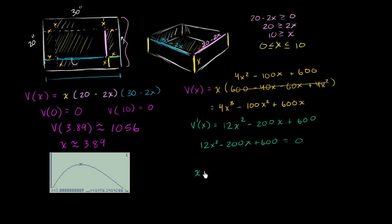So the x's that satisfy this are going to be x is equal to negative b. So it's 200, negative negative 200 is positive 200, plus or minus the square root of b squared, which is negative 200 squared. So I could just write that as 200 squared. That's going to be 4 with 4 zeros, so that's going to be 40,000 minus 4ac. So minus 4 times 12 times 600. All of that over 2 times a, so all of that over 24.